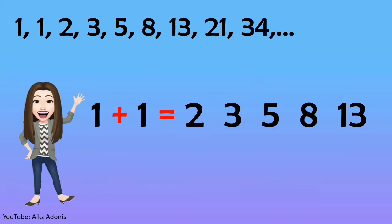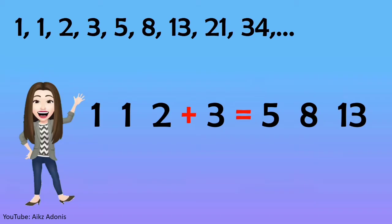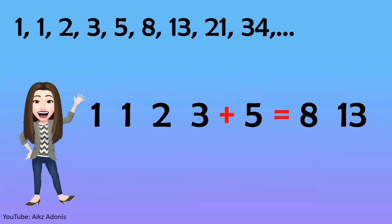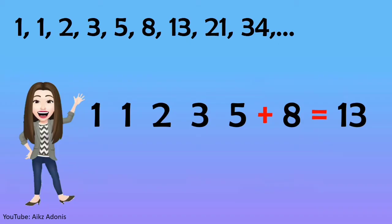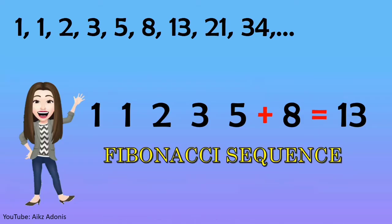Following the same pattern: 1 plus 2 equals 3, 2 plus 3 equals 5, 3 plus 5 equals 8, and 5 plus 8 equals 13. This pattern is called the Fibonacci sequence.